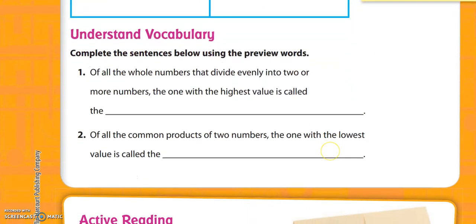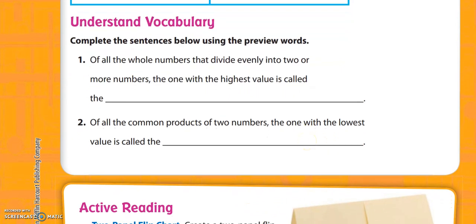So this says complete the sentence below using the preview words. Number one, of all the whole numbers that divide evenly into two or more numbers, the one with the highest value is called the greatest common factor. And that commonly gets called the GCF. And that's going to be from lesson 2.1.